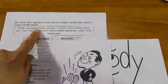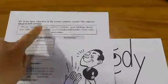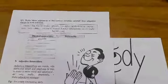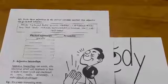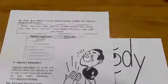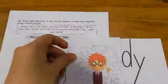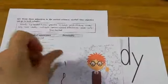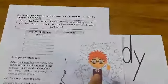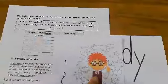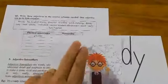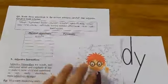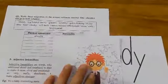'Brainy.' طبعاً الbrain هو الدماغ. Brainy يعني الذكي، المتذاكي، كثير الذكاء. Is it physical appearance or personality? It's personality.